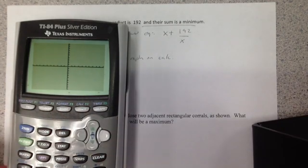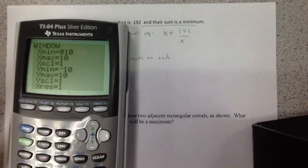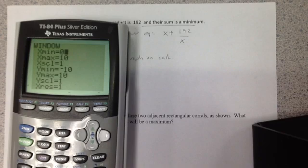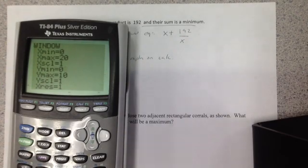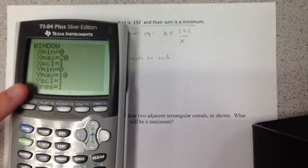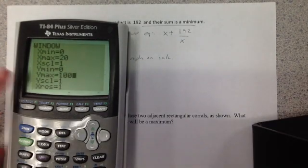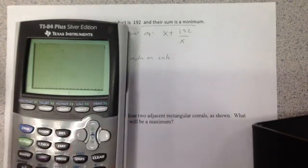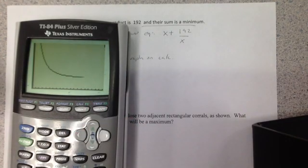If you notice, I don't really see anything. So I'm going to play with my window a little bit. My x min can be 0 since I'm looking for positive. My x max, I might go up to 20. My y min, again, it's going to be positive, so I'll keep that 0. My y max, I might make it 100. So I'm going to graph it again. And there it is.